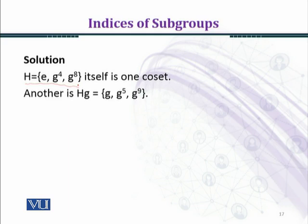The next coset contains G, G raised to power 5, and G raised to power 9. So we have a different set which contains G, G raised to power 5, and G raised to power 9. If we choose another element, we can find another coset class.